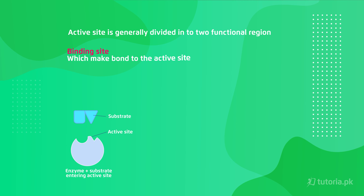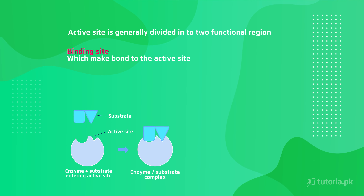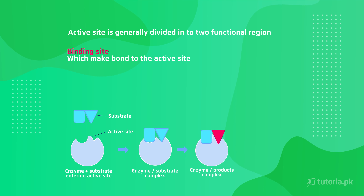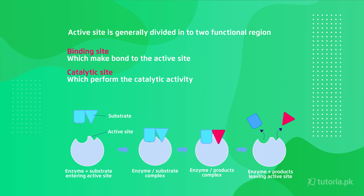The active site is divided into two functional regions. The first is the binding site, where the substrate attaches to the active site. The other is the catalytic site, where the actual reaction is performed.